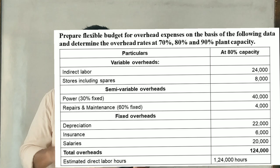Now, I have a question. This is a question in 2010. Prepare flexible budget for overhead expenses on the basis of following data. Determine overhead rates at 70%, 80%, and 90% planned capacity. So if we have a flexible budget, we have a flexible budget for 70%, 80%, 90%.